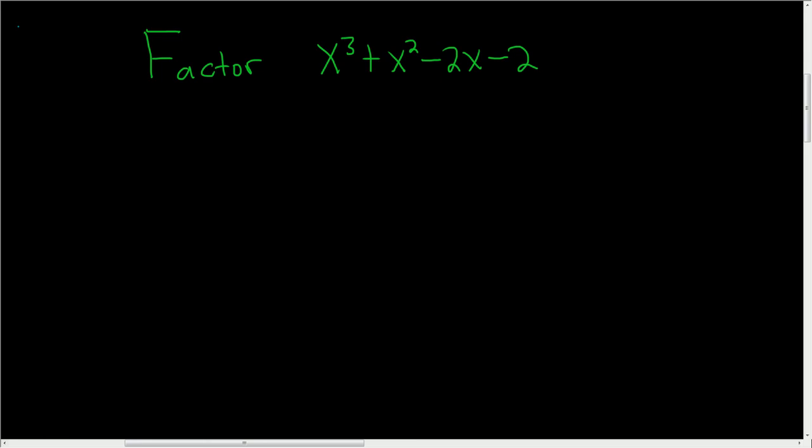Factor x cubed plus x squared minus 2x minus 2. Solution. In this case, we have four terms, so it's a good idea to factor by grouping. Here's how you do it.